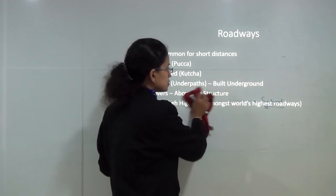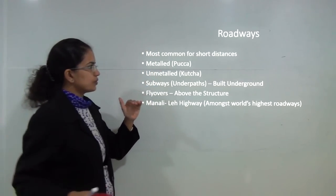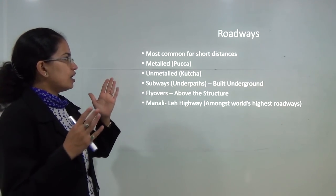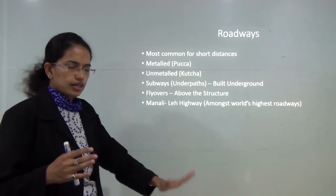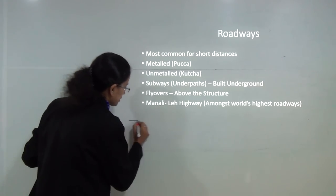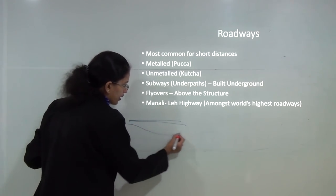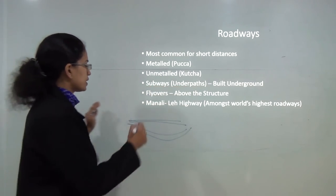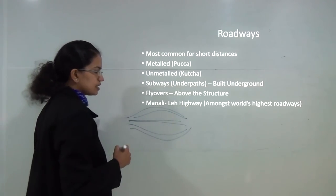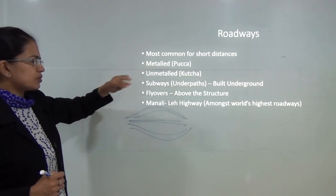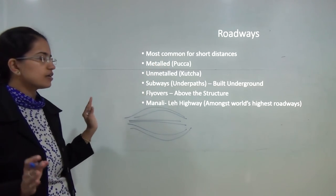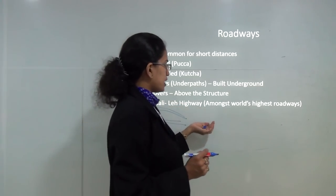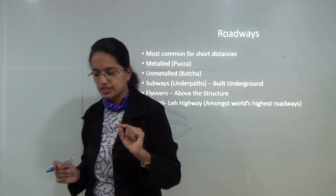Roadways are mainly used for short distances. Roads can be underground — known as subways or underpaths — or above the surface, known as flyovers. Roads can also be metalled, which is pakka road, or unmetalled, which is kachcha road. The Manali-Leh Highway in India is among the world's highest roadways.